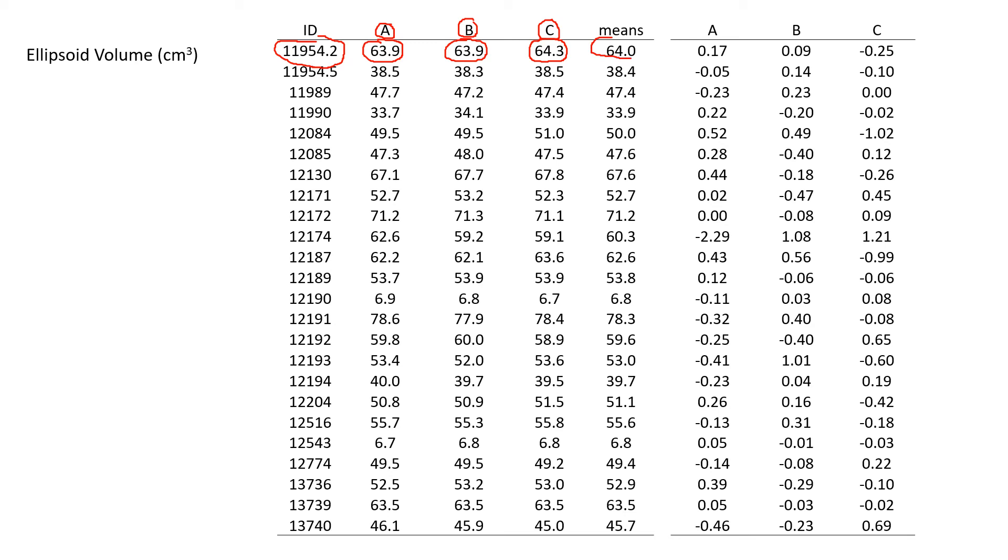Taking the mean of those three and then subtracting each one from the mean gave me three measurement errors in ellipsoid volume, cubic centimeters, of those three values. For this mussel 11954.2, on occasion A, B, and C.